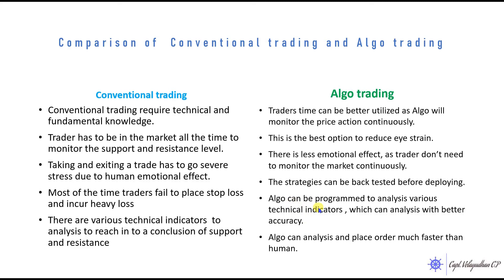Another advantage is that Algo can be programmed to analyze various technical indicators with better accuracy. At the same time, it can analyze multiple indicators and in a fraction of a second come out with a result. Since it is computer programmed, the operation will be faster — the placing of an order is much faster than human hands.